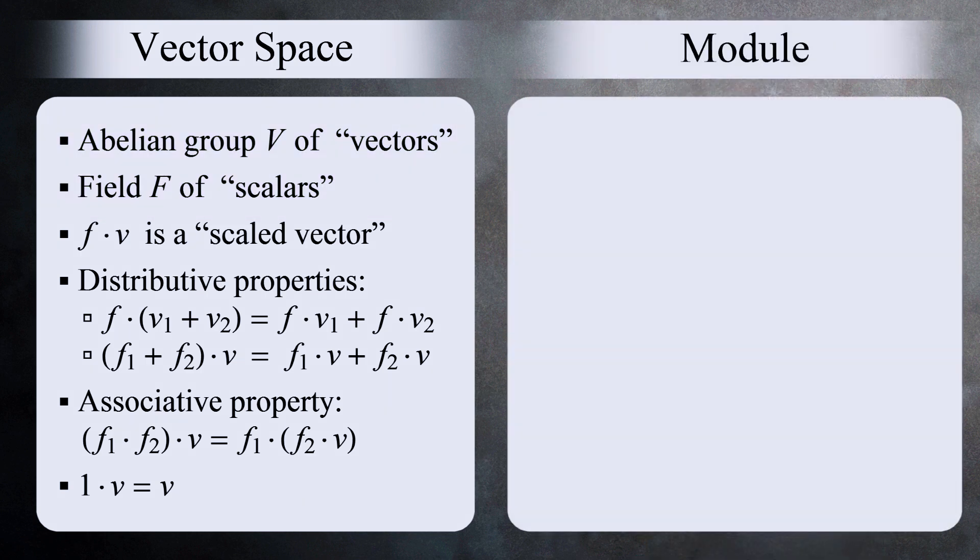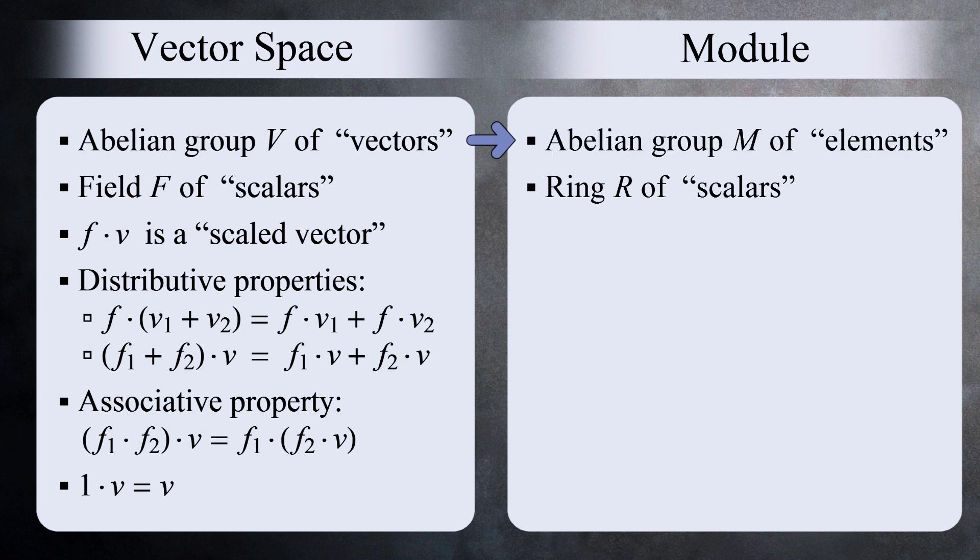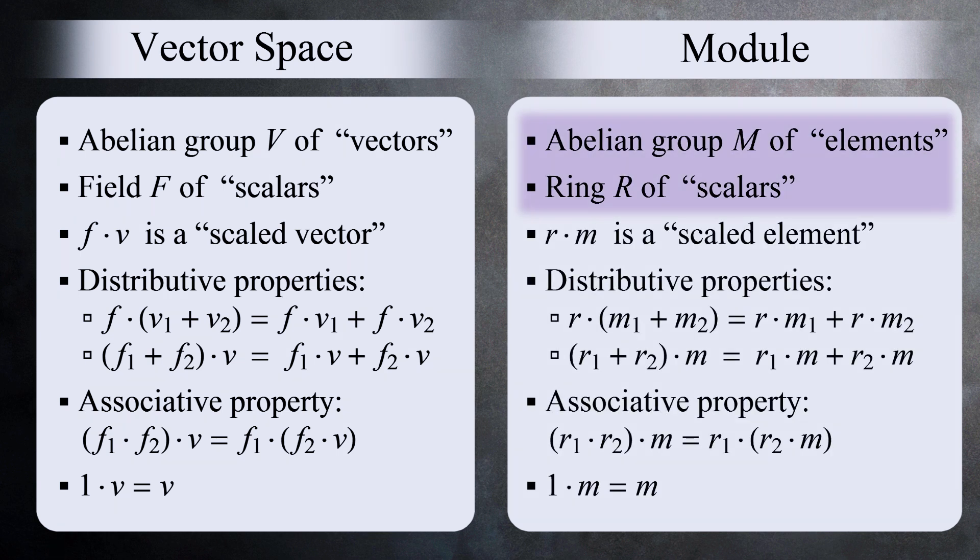A module is defined the same way, except instead of a field of scalars, you have a ring of scalars. So if we go through and replace F with R (R for ring), and replace V with M (M for module), you have the definition of a module. It's an abelian group M with a ring of scalars R.